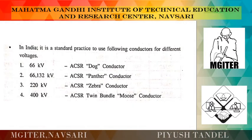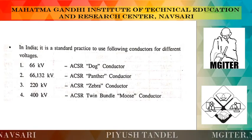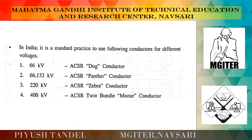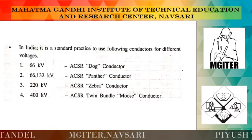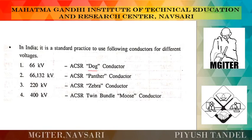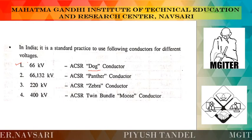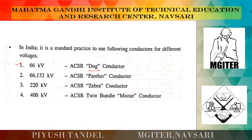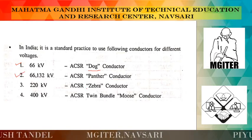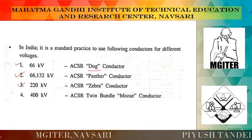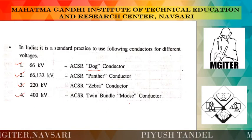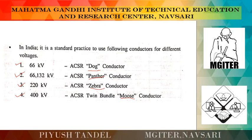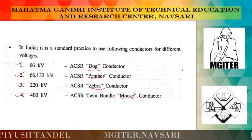Different types of conductors are used on transmission lines depending on the voltage class and amount of current. In India, it is standard practice to use ACSR conductors for different voltages. For 66 kV, we use the dog conductor; for 66 to 132 kV, we use the panther conductor; for 220 kV, we use the zebra conductor; and for 400 kV, we use ACSR twin moose conductor.